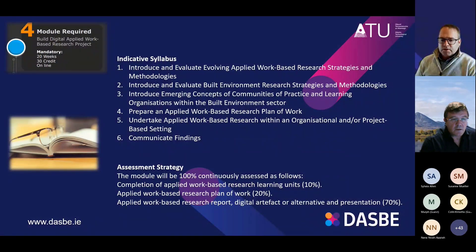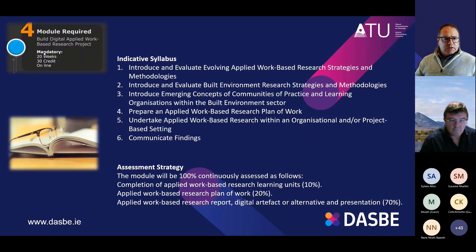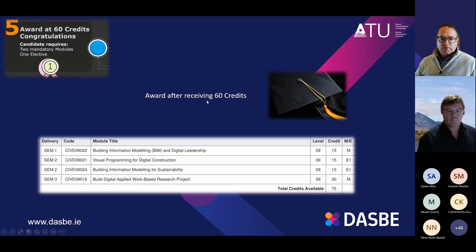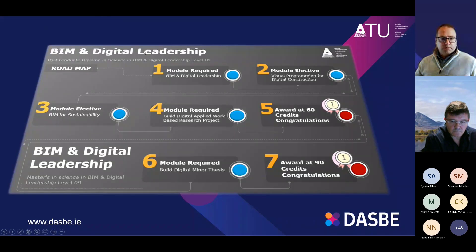Everyone has plenty of problems in their work environment, so there's plenty of opportunity to find solutions for your organization. Once you complete the research project, you exit with 60 credits. To recap: BIM and Digital Leadership is mandatory, then visual programming and sustainability are two 15-credit electives, and the work-based project completes the 60 credits for the postgraduate diploma. You can then move on to the masters, which is an add-on using a minor thesis.